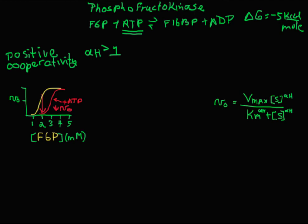Fructose 2,6-bisphosphate (F2,6BP) is an allosteric activator, and it activates the enzyme by stabilizing the active form. You can see the effect on velocity: for a given concentration of substrate, say at 1 millimolar, the velocity of the reaction increases. That's how allosteric enzymes can be regulated.